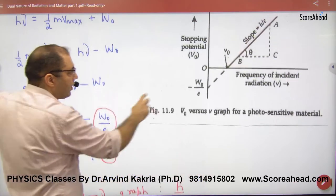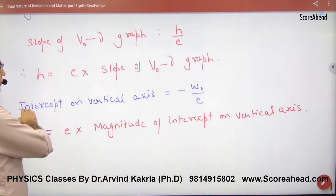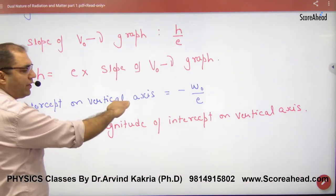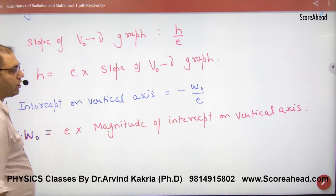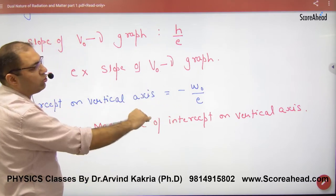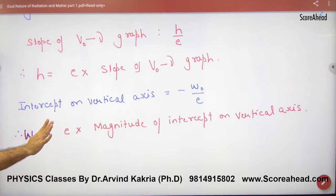If you look at the intercept on the vertical axis, intercept is minus W₀ by e. So the work function W₀ - we multiply the intercept by e and take the magnitude, because work function is negative, so you have to take positive.